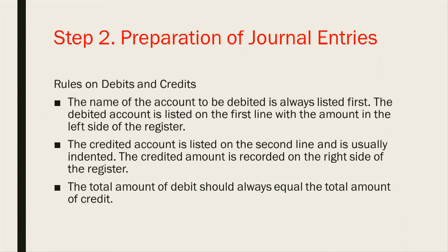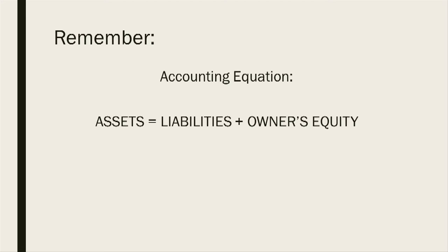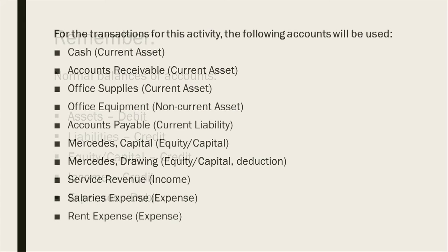Step 2: Preparation of journal entries. We should remember the accounting equation, which is assets equals liabilities plus owner's equity. We should also remember the normal balances of the accounts. Assets are on the debit side. Liabilities are on the credit side. Equity or capital are also on the credit side. Income is on the credit side and expenses are on the debit side.